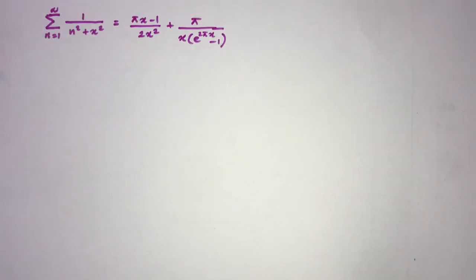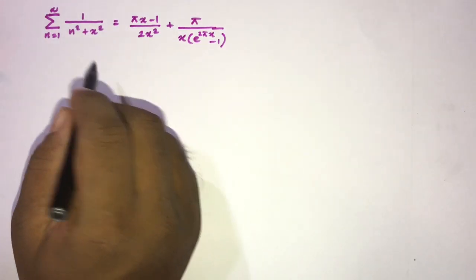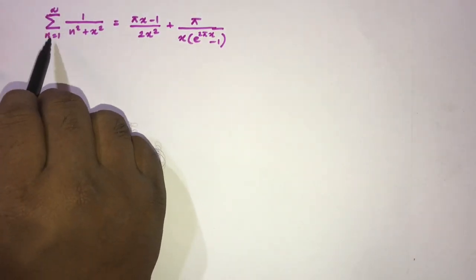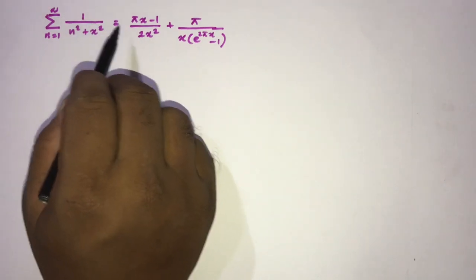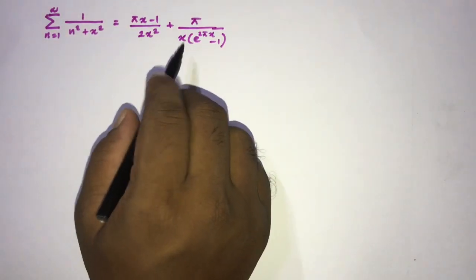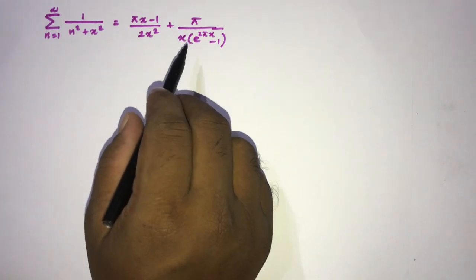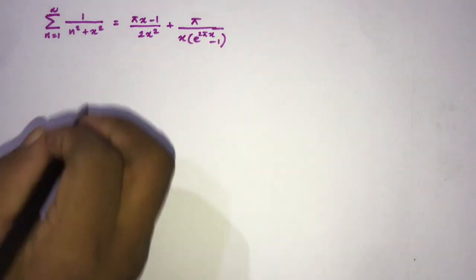Welcome to the Mathematics channel. In this video we are going to prove this identity: the infinite sum from 1 to infinity of 1 over (n² + x²) is equal to 1/(2x²) + π/(x · (e^(2πx) − 1)) minus 1/(2x).